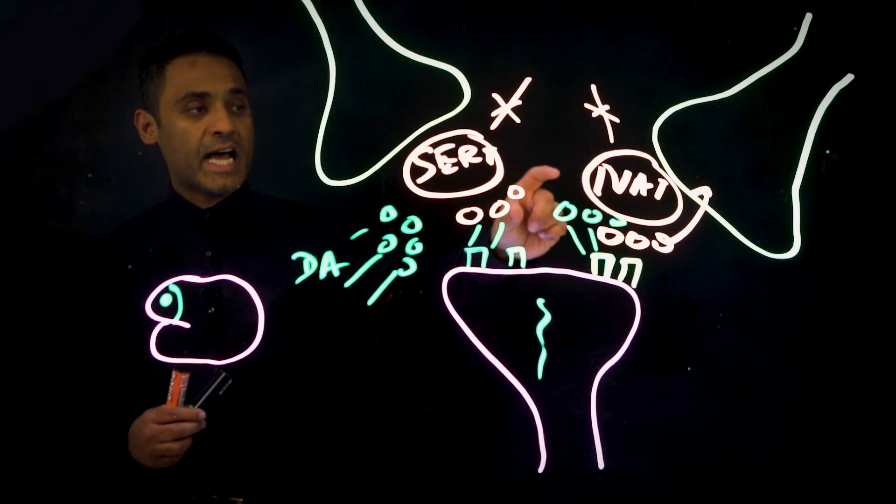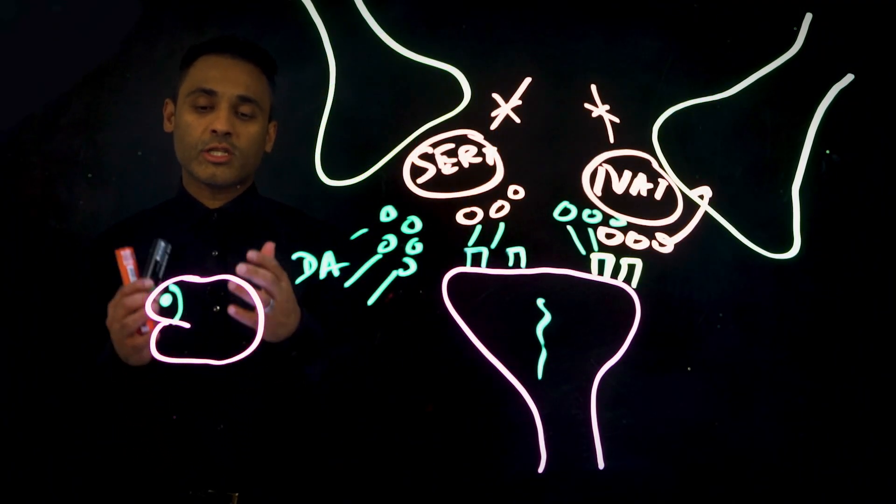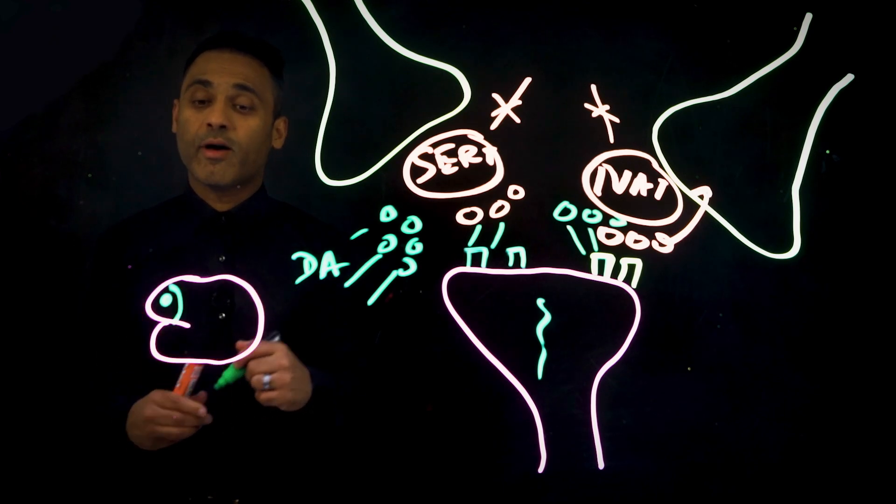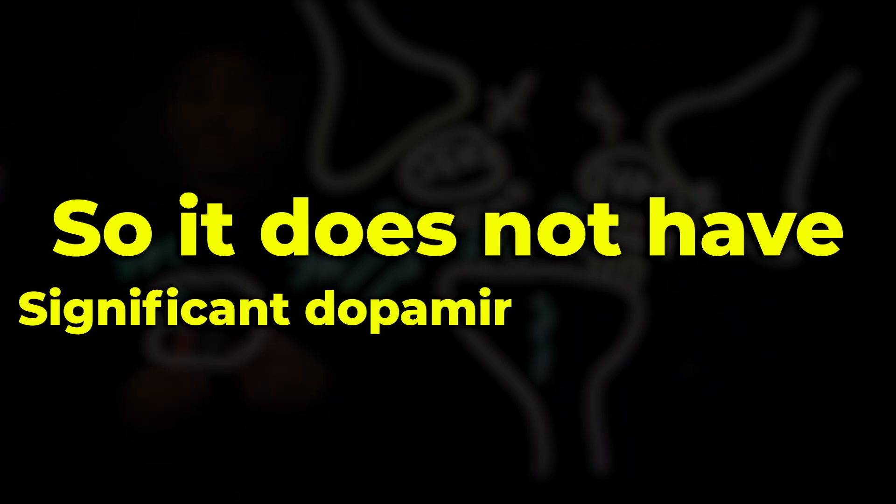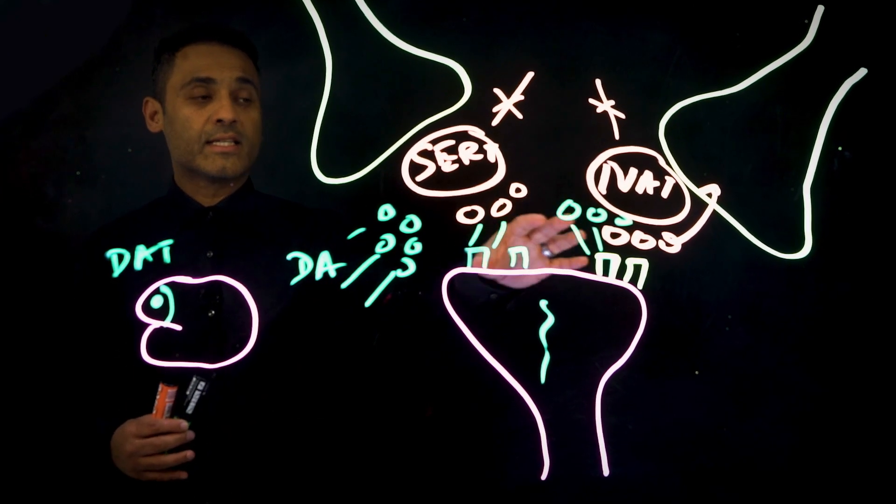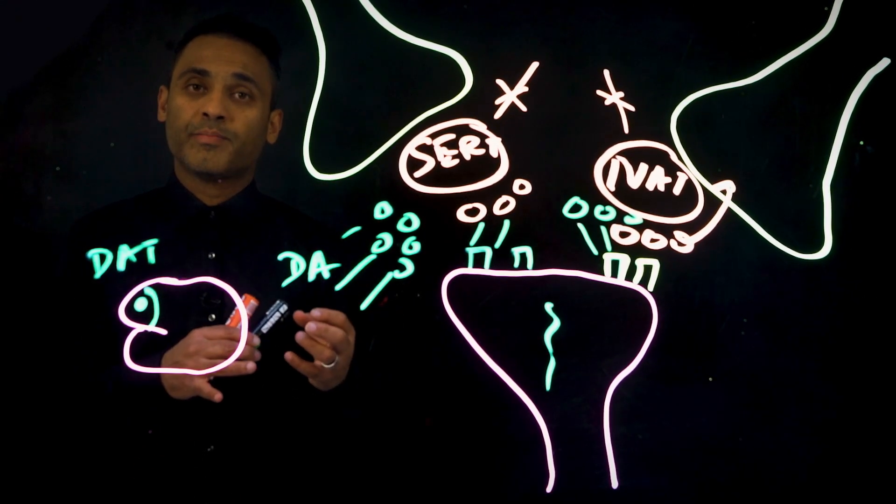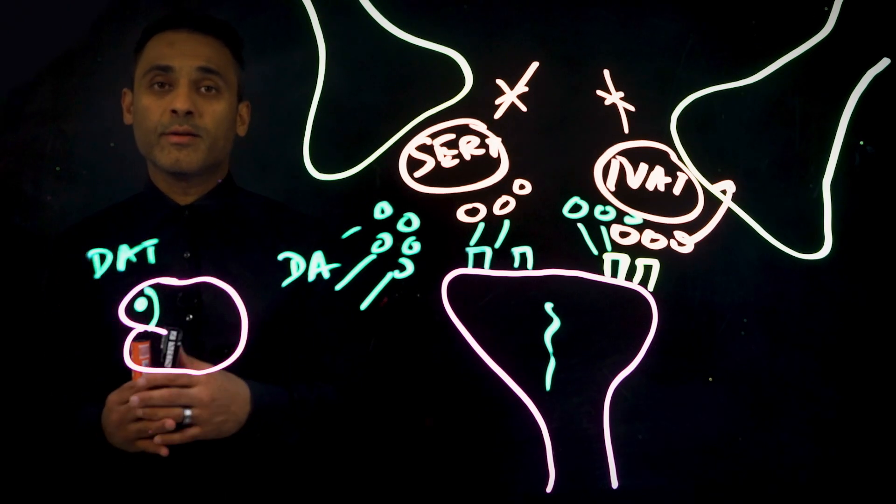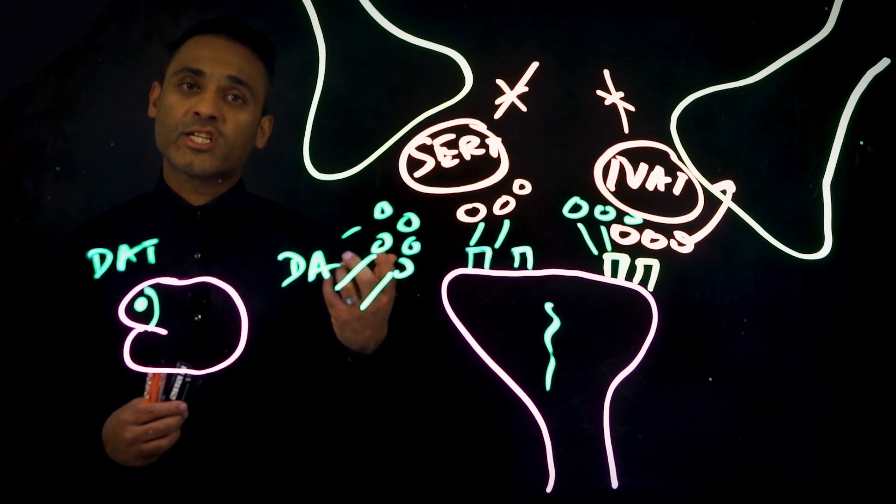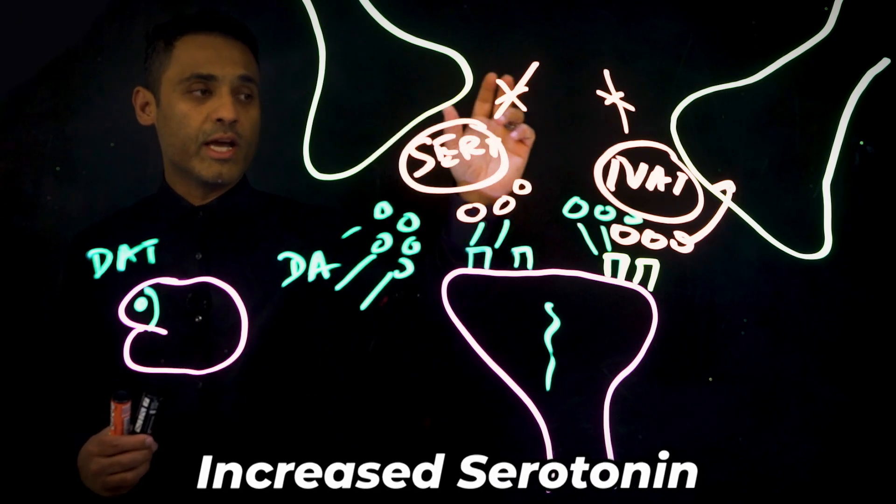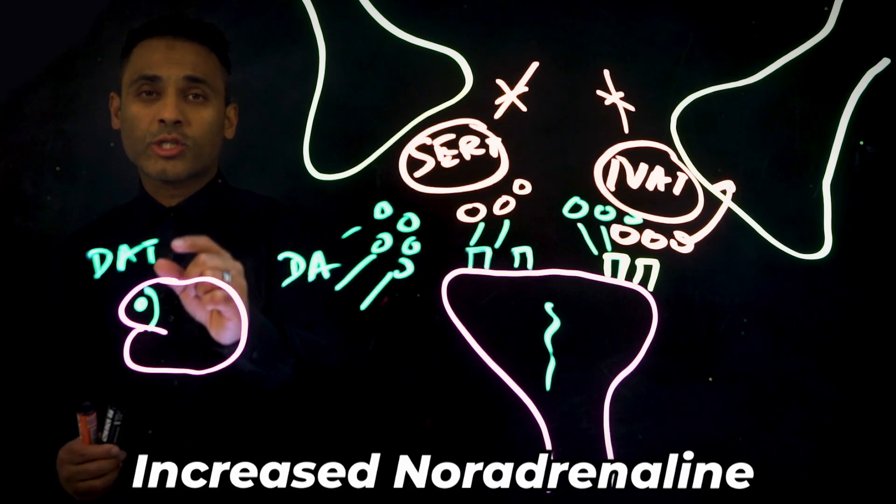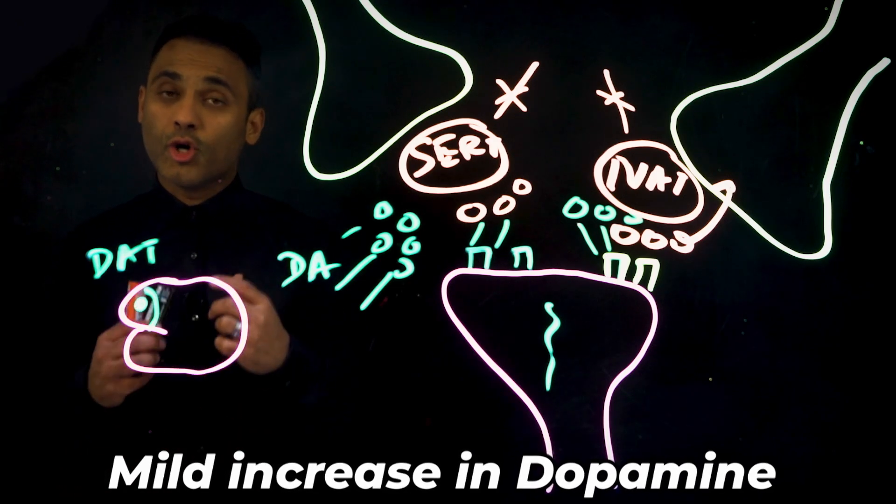And one of the things that NAT does in the prefrontal cortex - you see, the prefrontal cortex does not have many DAT, so it does not have significant dopamine transporters. So what NAT does is it does the function for dopamine in the prefrontal cortex. So essentially what we have with an SNRI is we have increased serotonin, we have increased noradrenaline, and we also have a little bit of increased dopamine.